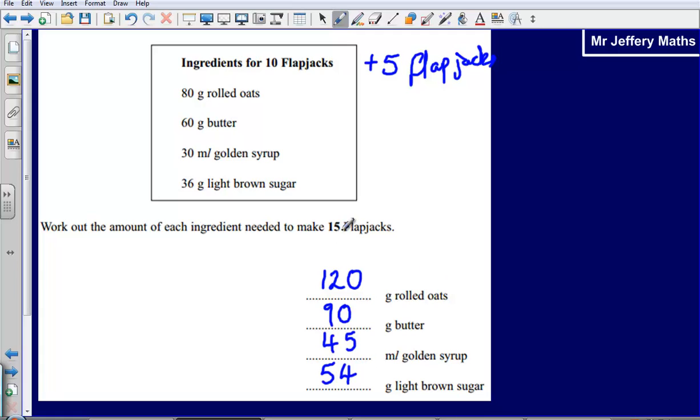And so my answers there. To make 15 flapjacks I would need 120, 90, 45, and 54 of each of those items. Okay, thanks for watching.